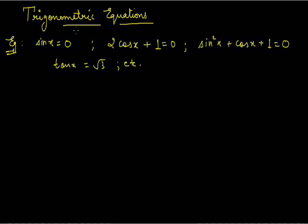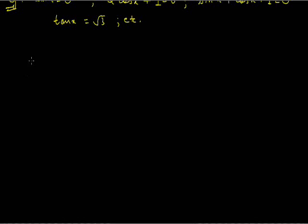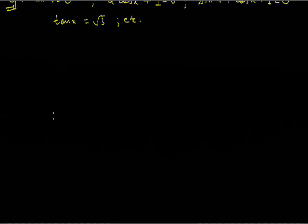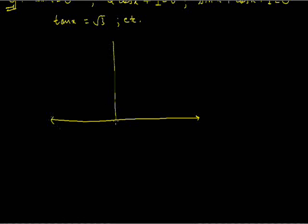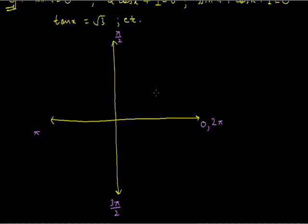Solving a trigonometric equation simply implies that we need to find the value of this unknown angle. Now let's discuss about the quadrants. This is the horizontal line and this is the vertical line. Starting from here, we have 0, then pi by 2, then pi, then 3 pi by 2, then 2 pi. So when we move from 0 to 2 pi, we say that we have completed a revolution.